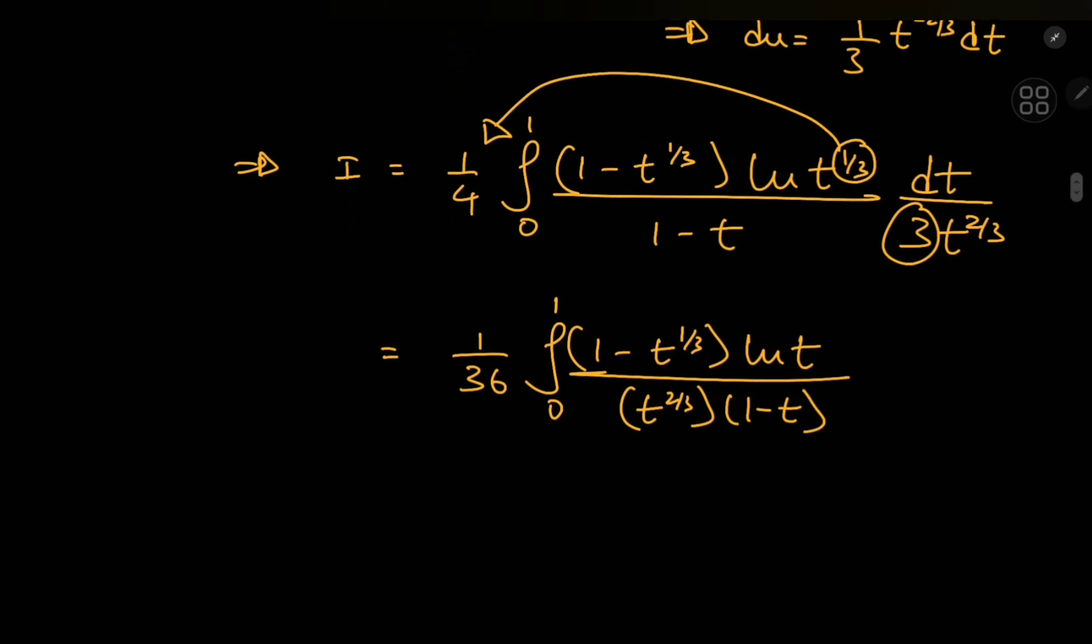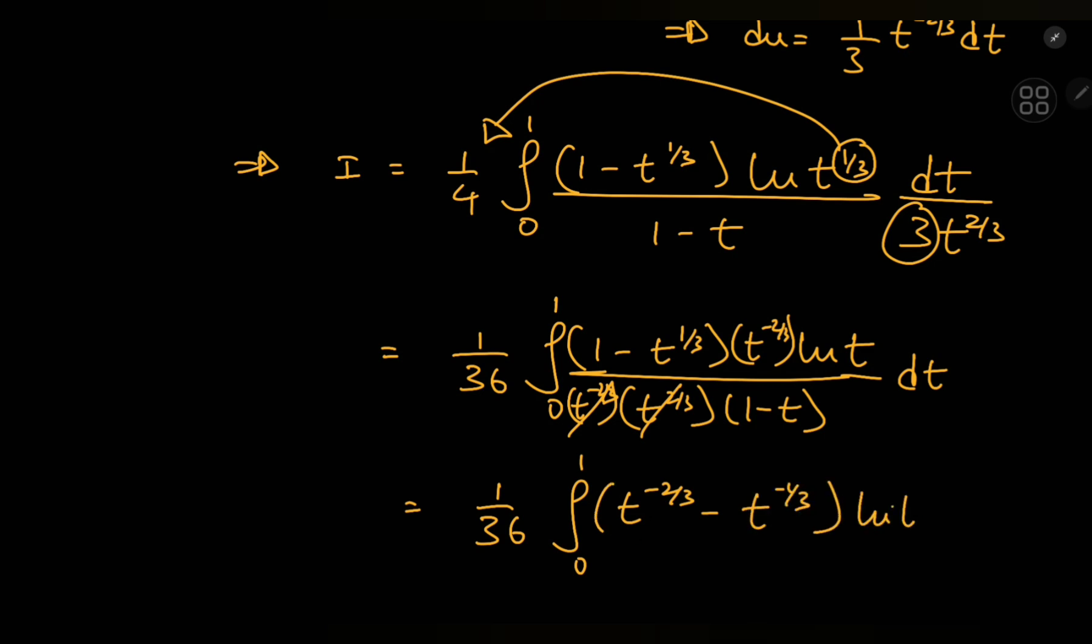Now a good option would be to expand using t to the negative 2 thirds. So that's exactly what I'm going to do. So expanding using t to the negative 2 thirds, we get rid of the factor in the denominator, one of the factors anyway. And in the numerator we have t to the negative 2 thirds minus t to the negative 1 thirds all times log t divided by 1 minus t dt.